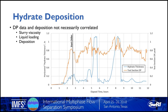A common question is: why not just use a DP cell to measure when a blockage is forming? The DP data and deposition may not necessarily be correlated. Plotting hydrate thickness (blue line) against differential pressure from the DP cell (orange line) over time shows that around hour five to six a thick hydrate deposit formed but DP data didn't go up, while in the second deposit around hour eight the DP data did increase. Differential pressure across a pipe section relates to viscosity, flow area, and liquid content in the line—so caution is warranted when relying solely on DP data to detect plugging.